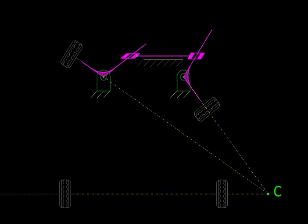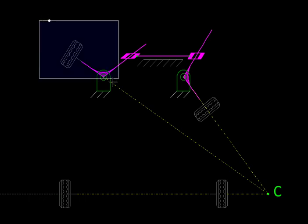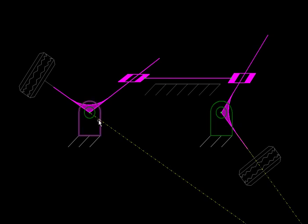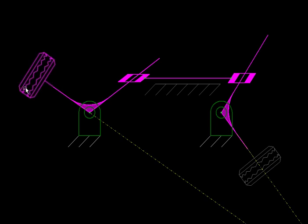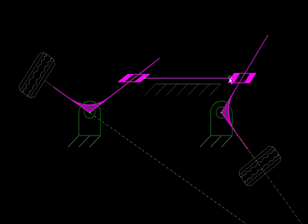Now let us take a look at the Davis steering gear. It consists of two fixed pins or revolute pairs fixed to the chassis. Then these L-shaped links, or bell crank levers, are fitted here — on one side they hold the wheel, on the other side they slide through a guide. These two guides are connected to a third link via two revolute pairs.